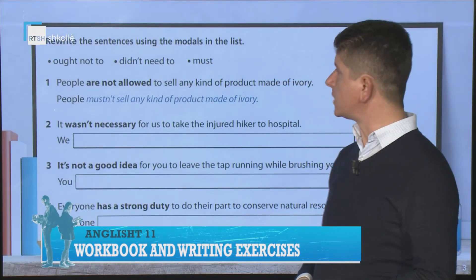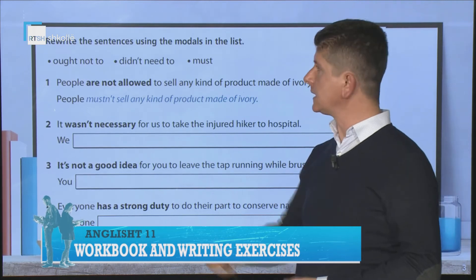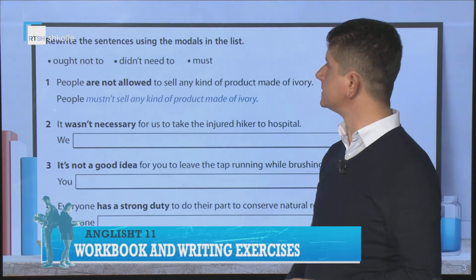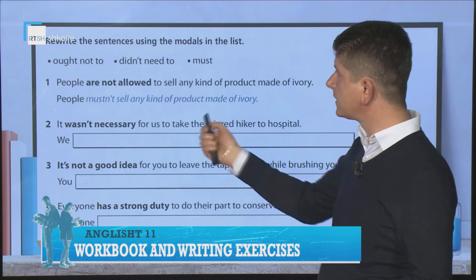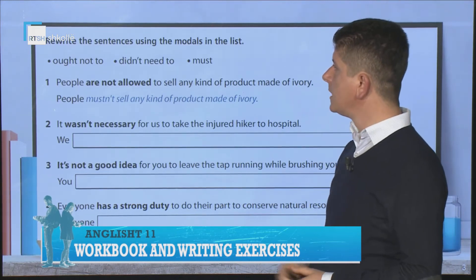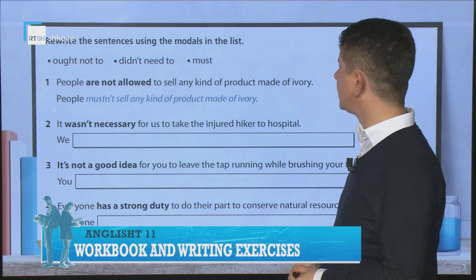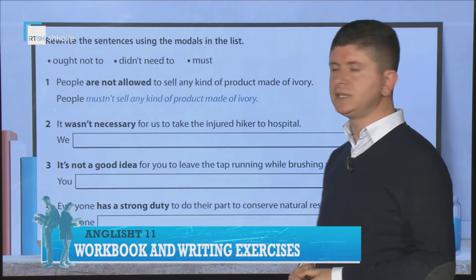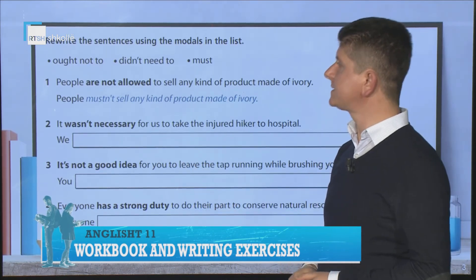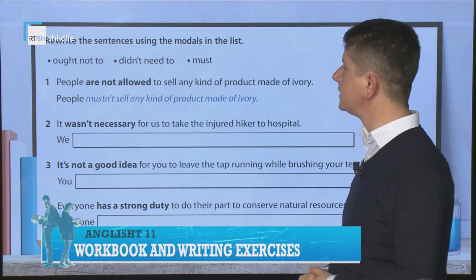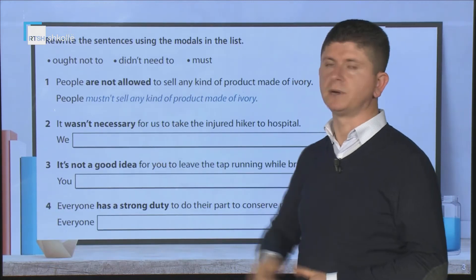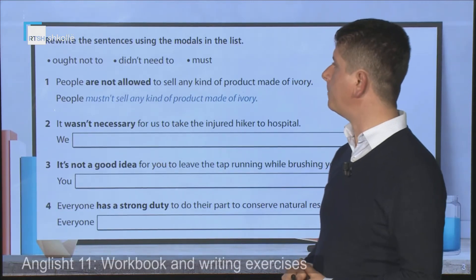In this exercise we are going to use these modals to rewrite the sentences. The first example is given: 'People are not allowed to sell any kind of product made of ivory.' This becomes: 'People mustn't sell any kind of product made of ivory.' We see that 'are not allowed' is replaced by 'mustn't'.